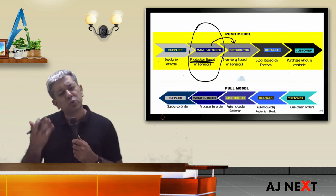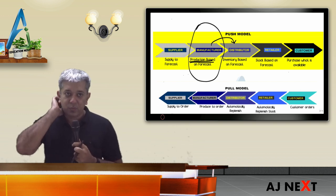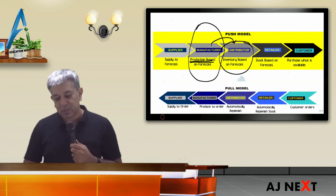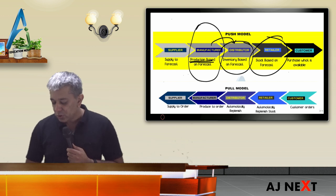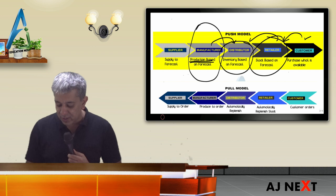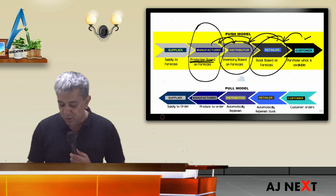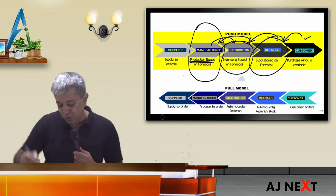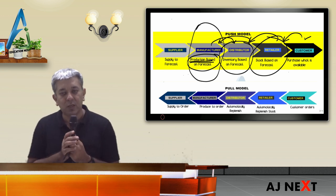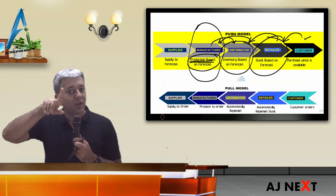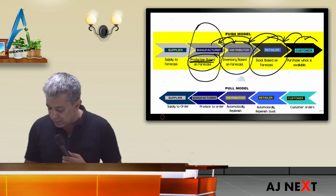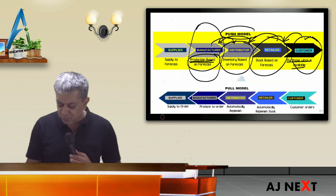Because your money is tied up in stocks. So traditionally, what would they do? They estimate the demand and produce accordingly. But think about it: you supply goods to the wholesaler or distributor. The distributor doesn't know when retailer demand will come, because the retailer doesn't know when customer demand will come.